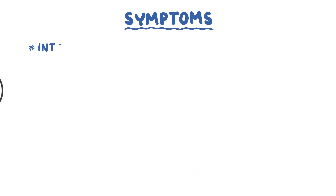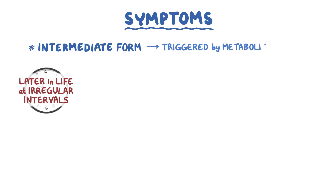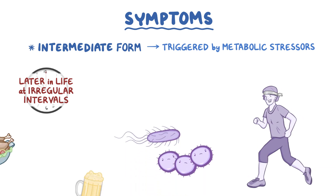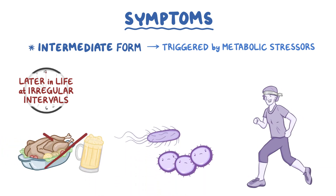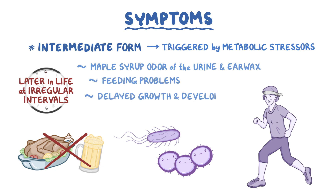In the intermediate form, symptoms appear later in life at irregular intervals. These can be triggered by metabolic stressors like heavy exercise, infections, or fasting, where the body starts to break down its own proteins. Symptoms include a maple syrup odor of the urine and also the earwax, feeding problems, and delayed growth and development.